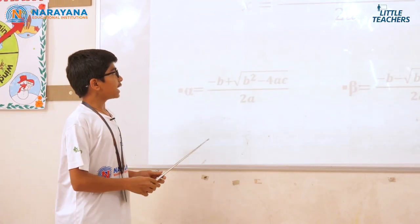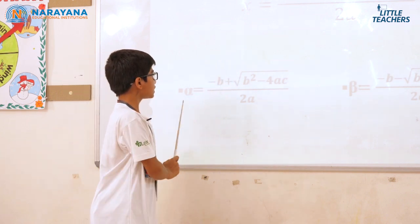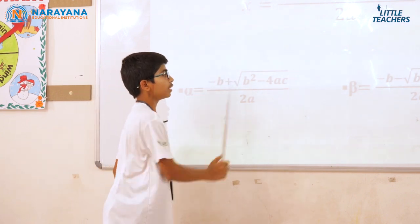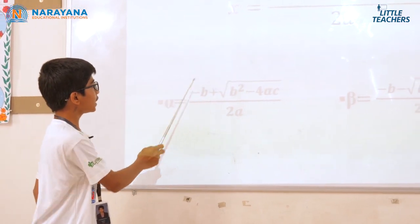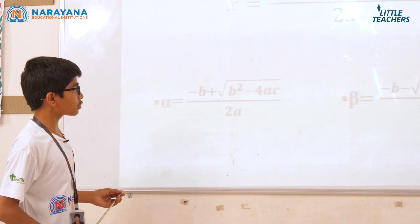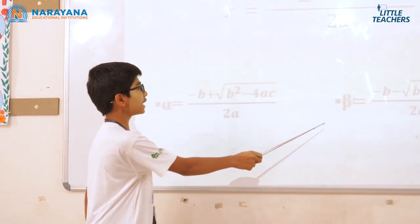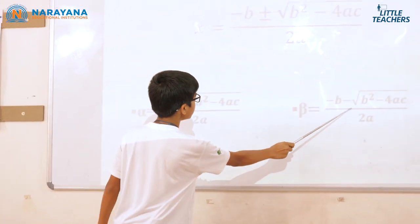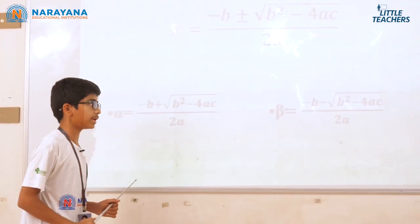The x value has two solutions, alpha and beta. Alpha = (−b + √(b² − 4ac)) / 2a, and beta = (−b − √(b² − 4ac)) / 2a.